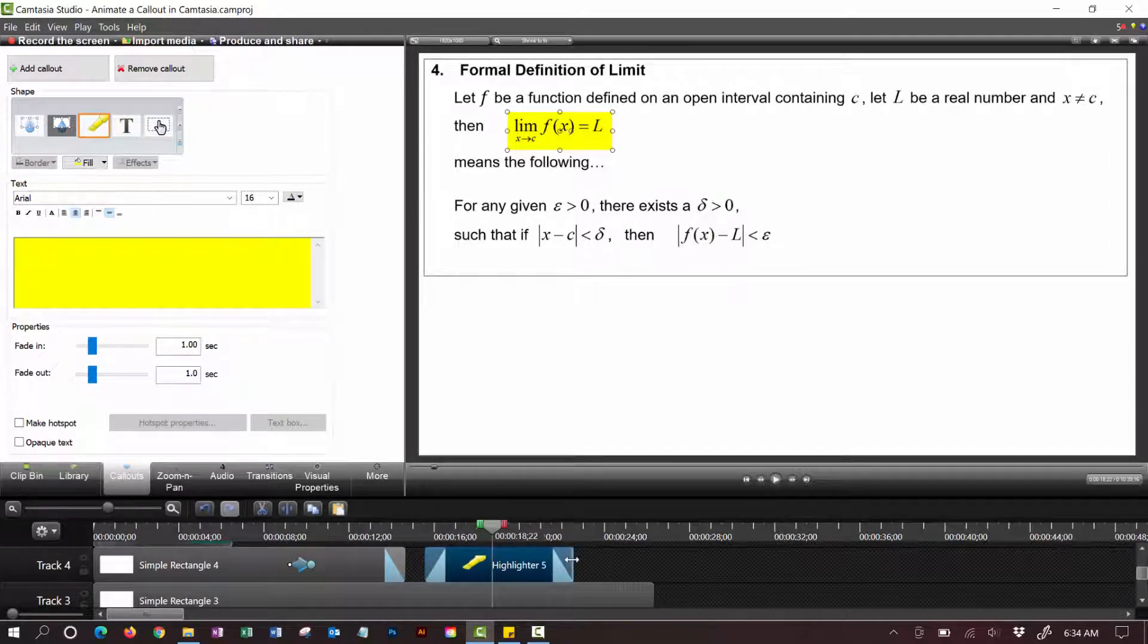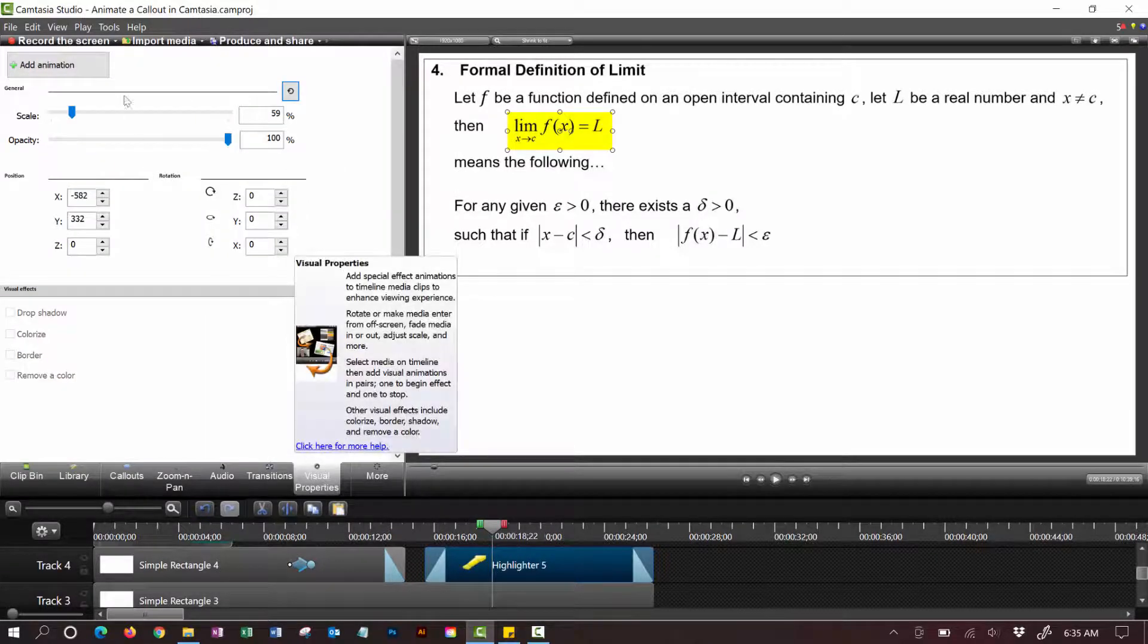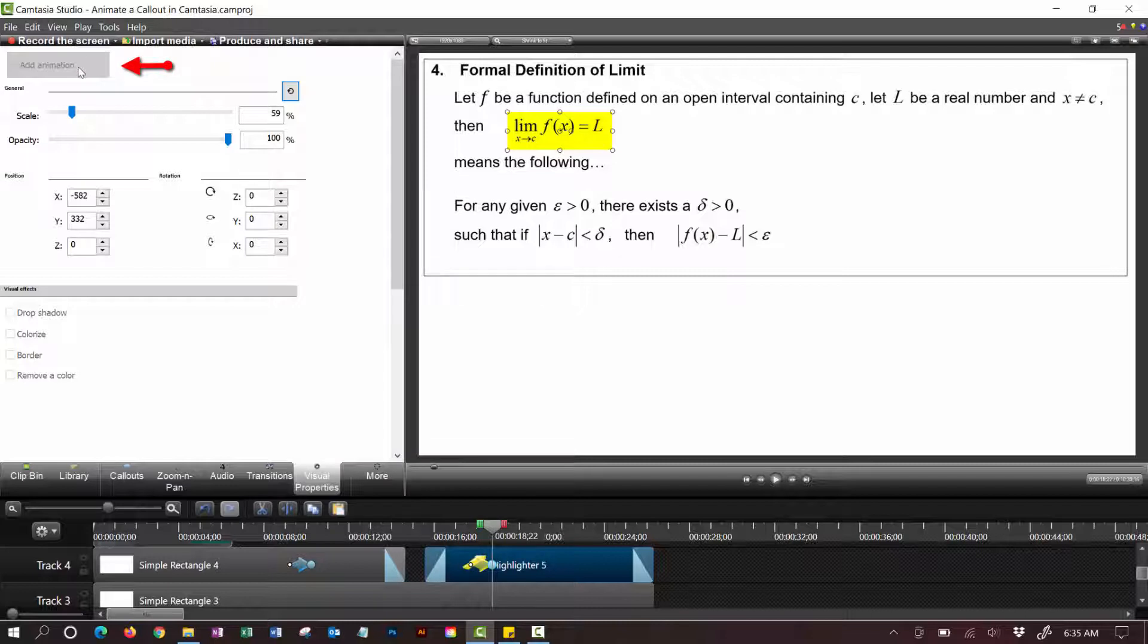If I want to move that highlighter to another section I can animate it. So I make sure that that highlighter is clicked. Come to visual properties. Add an animation.